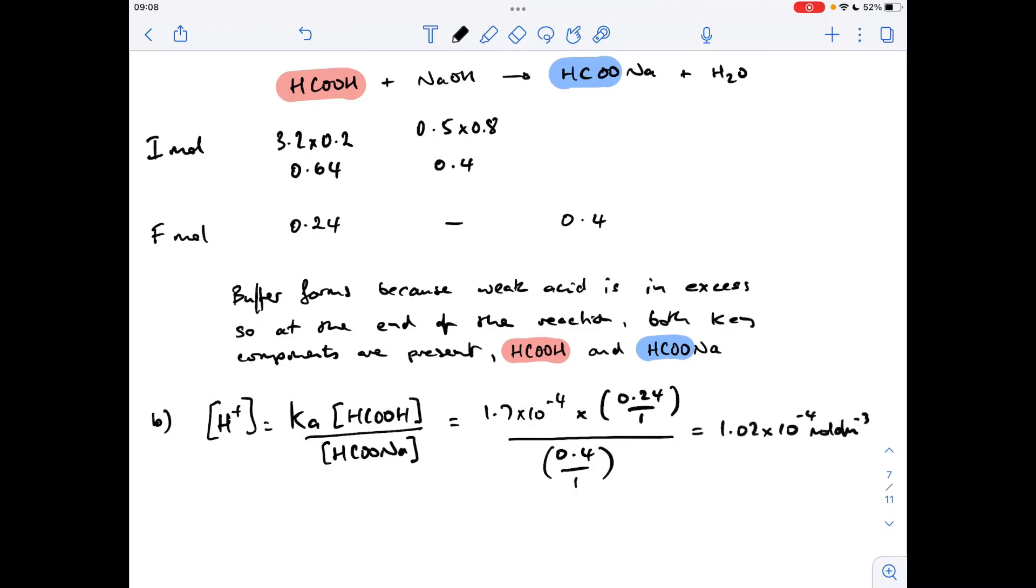Comes out at an H plus concentration of 1.02 times 10 to the minus 4 moles per decimetre cubed. So all we need to do now is minus log that to get the pH. But remember, we need to give it to two decimal places. So we're getting a pH, calculate the value of that. So at two decimal places, 3.99.